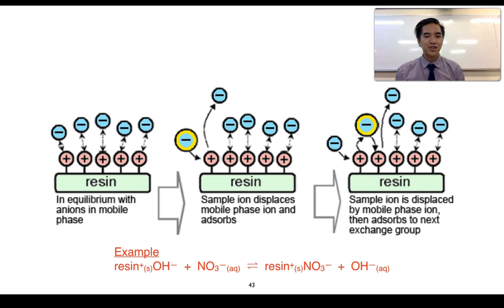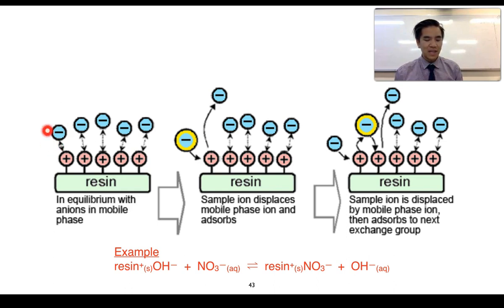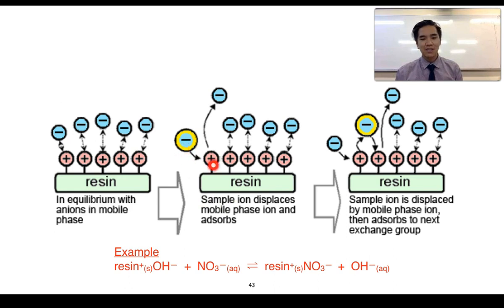This diagram shows you an example of anion exchange ion chromatography. We've got our resin here, which is coated in positive charge. It is going to allow for the adsorption of negatively charged ions, which might be found in our mobile phase. We then inject our sample, which can consist of anions. These anions can displace those ions from the mobile phase and adsorb onto the surface of our resin beads.